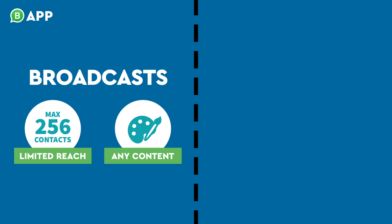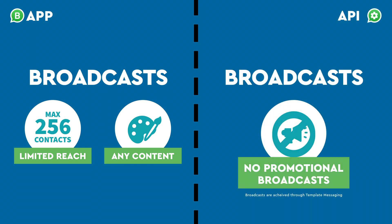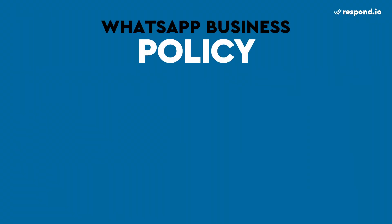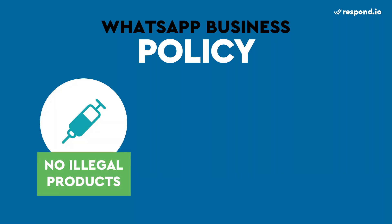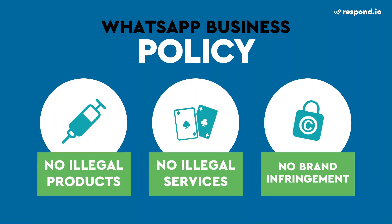You'll find a similar situation when it comes to broadcasting. The app allows you to broadcast any content, but only to 256 contacts at a time. But with the API, you can send messages to a larger amount of contacts, but you are only allowed to send transactional notifications, like a flight status update. As for messages that are not allowed, anything involving illegal products, services, or third-party infringement will get your account banned.